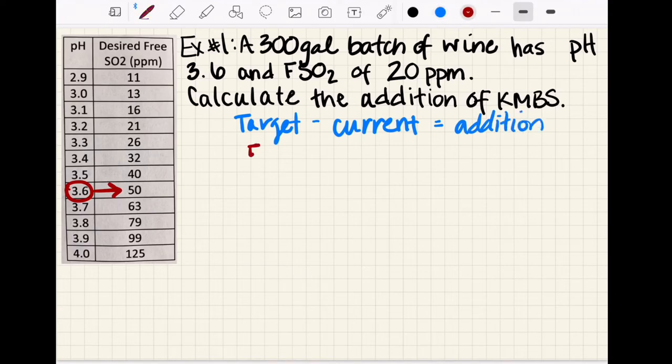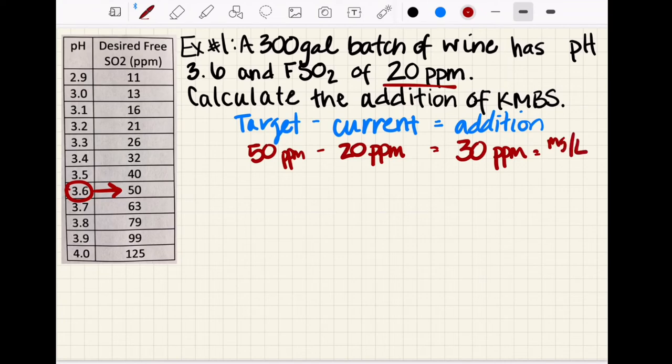Our target is 50, our current from our example is 20, and that leaves us with an addition to make of 30 ppm. Remember that ppm is equivalent to milligrams per liter, so we're going to use milligrams per liter when we put this in our equation.